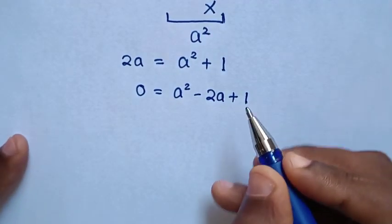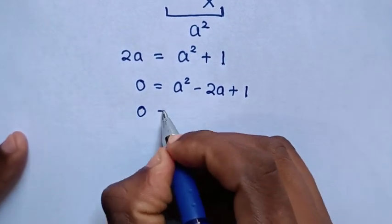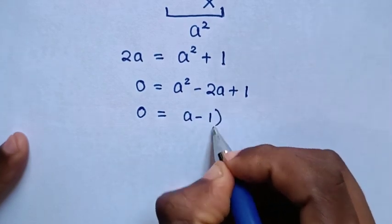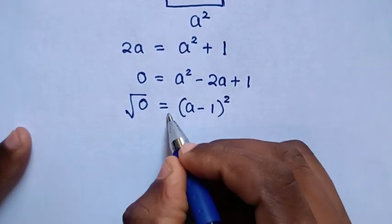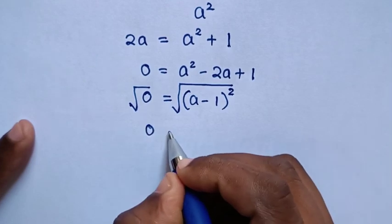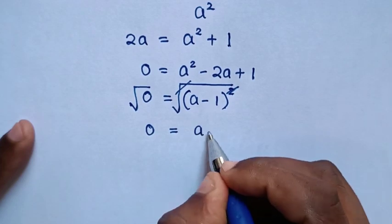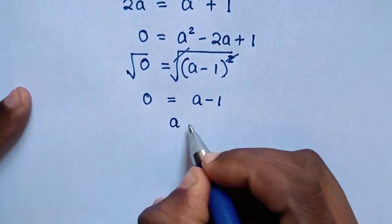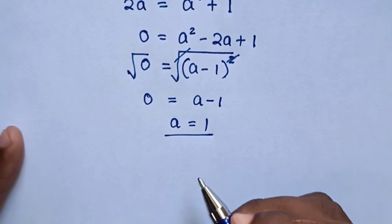From this quadratic, a squared minus 2a plus 1 is a perfect square: (a minus 1) squared equals 0. Taking the square root of both sides gives a minus 1 equals 0, so a equals 1.